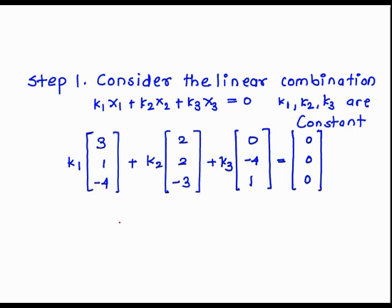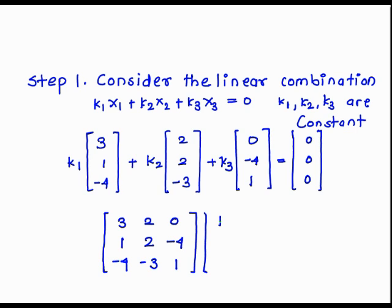The coefficient matrix form is: the matrix with rows (3, 1, -4), (2, 2, -3), (0, -4, 1) multiplied by the column vector (k1, k2, k3) equals (0, 0, 0).